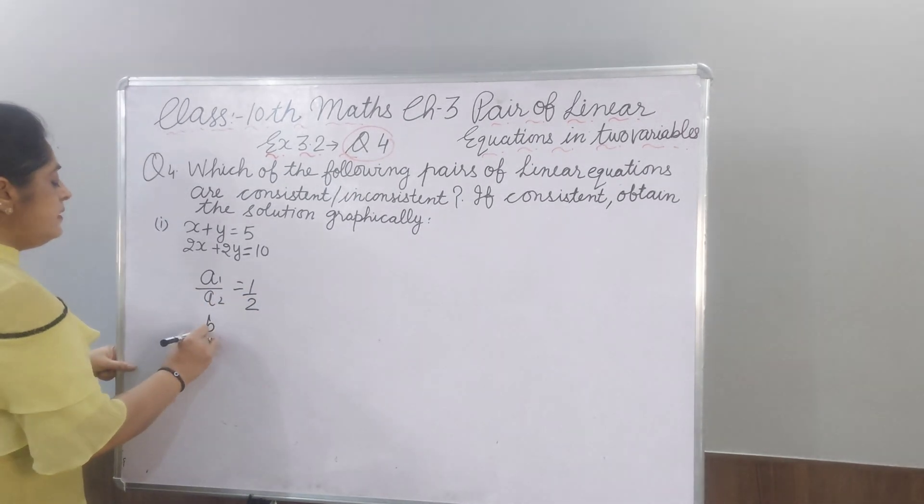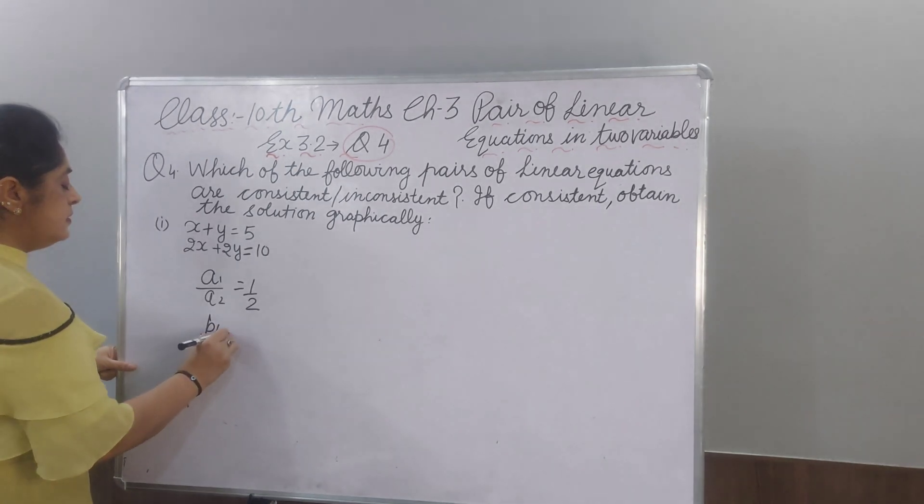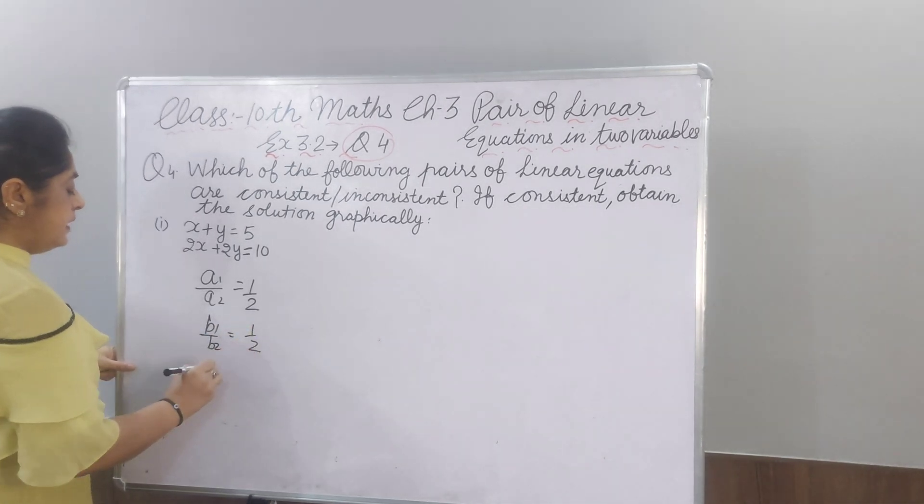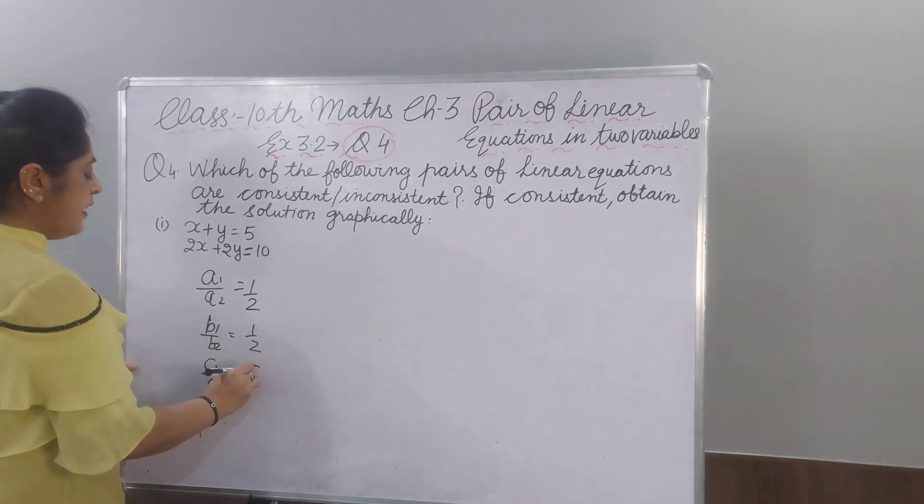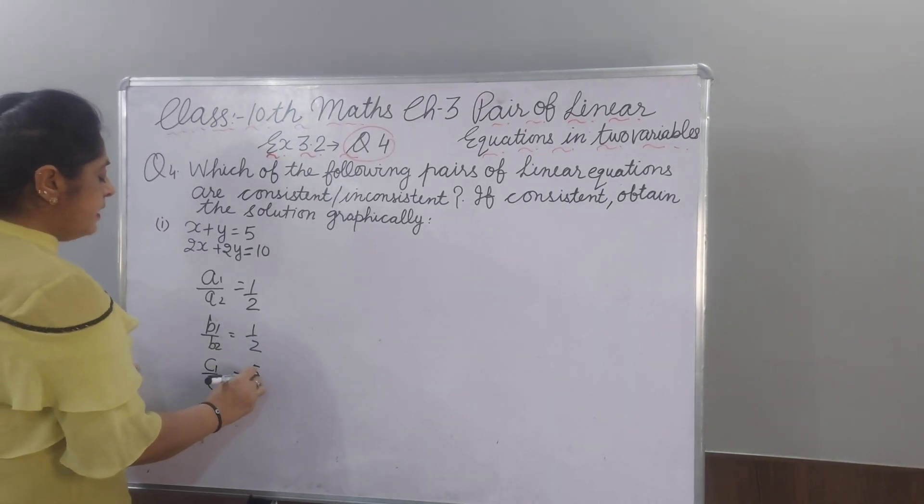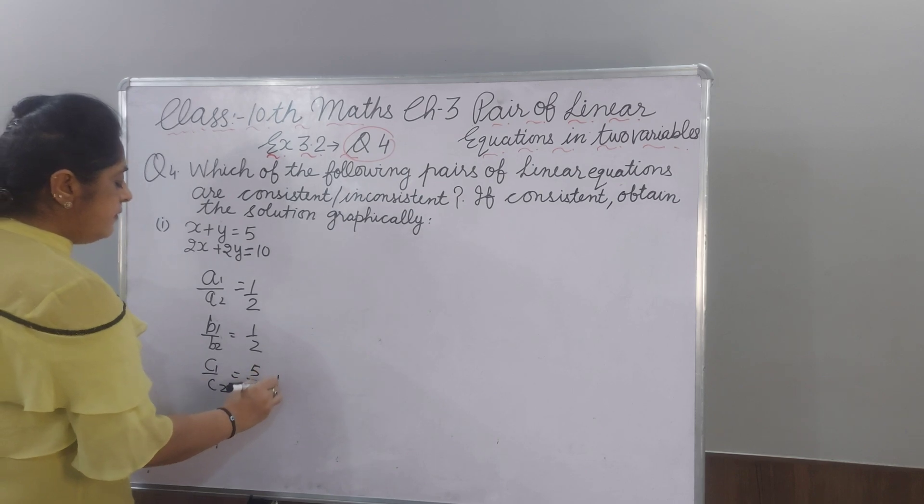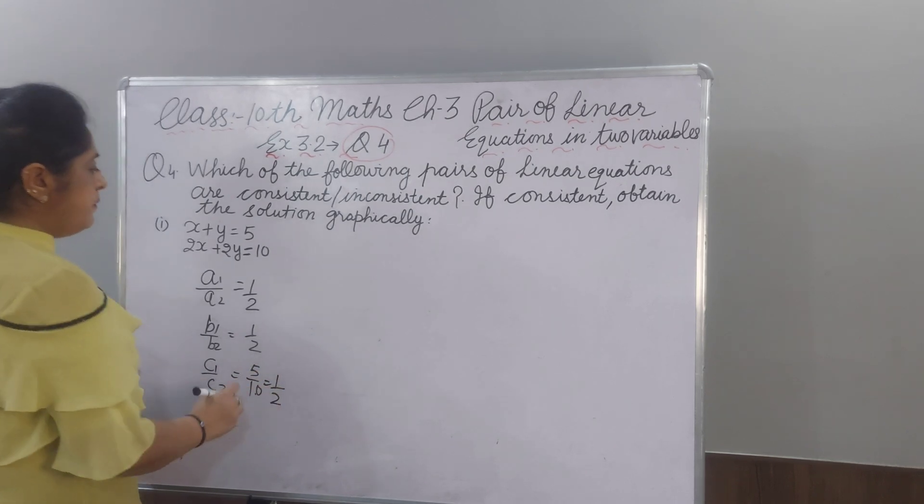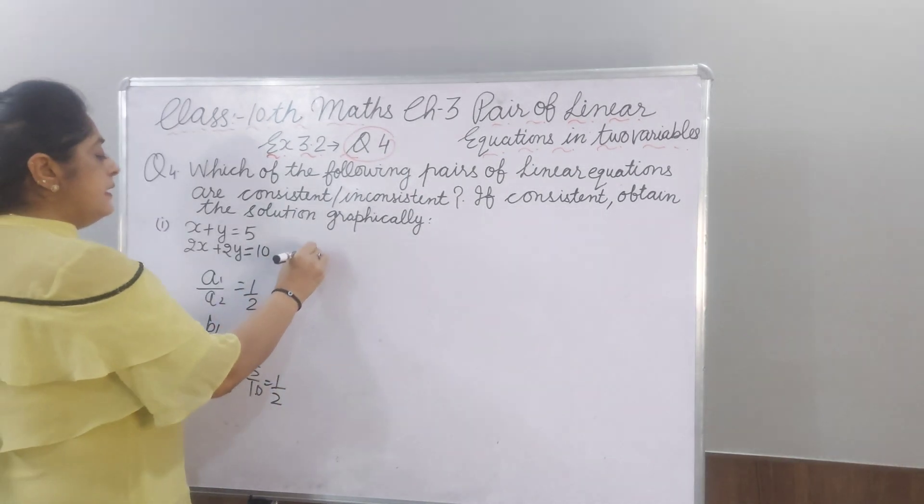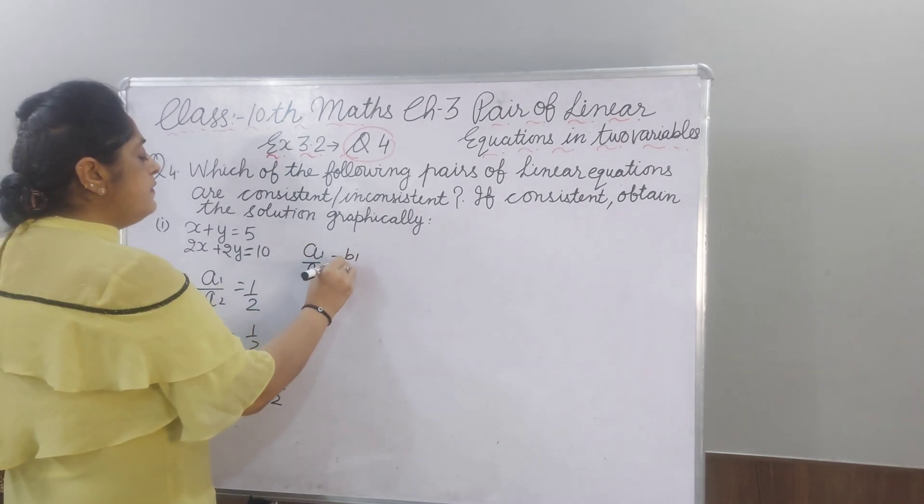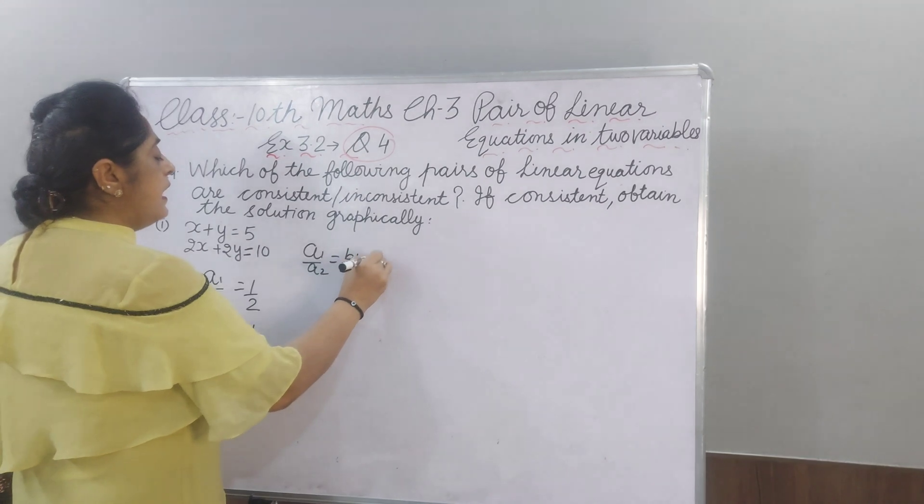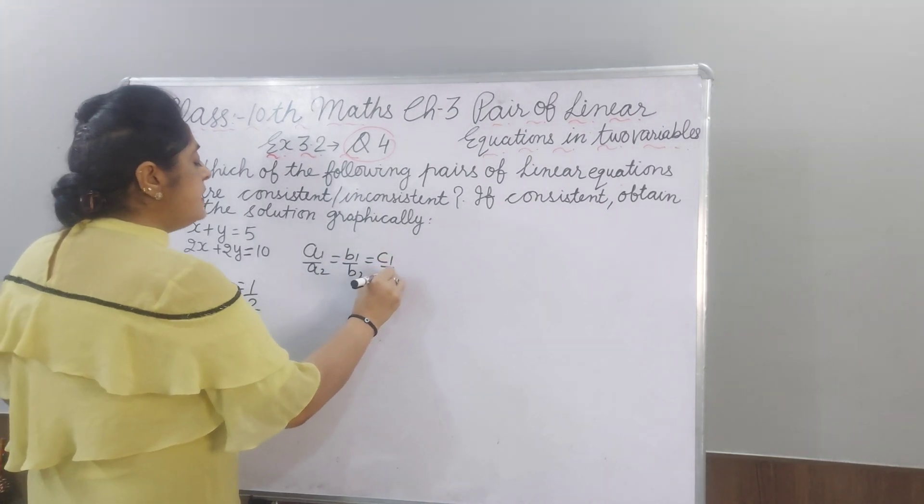Now, b1 by b2, 1 by 2 and c1 by c2, it is 5 by 10 and 5 to the 10, you will get 1 by 2. What do you have that? a1 by a2 is equal to b1 by b2 and is equal to c1 by c2.